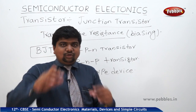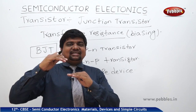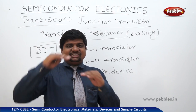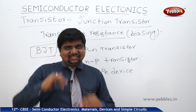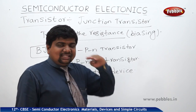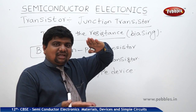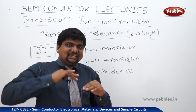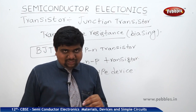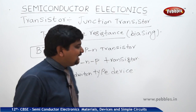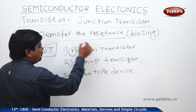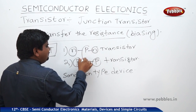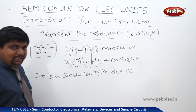The transistor is generally described as a sandwich-type device. Like a sandwich with two bread slices and a filling in between, the top and bottom portions are of the same material, while the middle stuff is different. For example, in a structure like P-N-N, the middle layer differs from the outer layers.